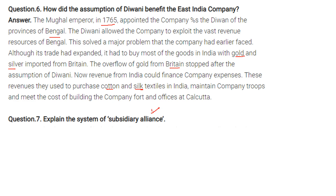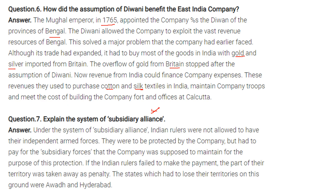Explain the system of Subsidiary Alliance. Under this system, Indian rulers were not allowed to have their own independent armed forces. They were to be protected by the company but had to pay for the subsidiary forces the company maintained for their protection. If Indian rulers failed to make payment, part of their territory was taken away as penalty. States that lost territories due to non-payment under the Subsidiary Alliance were Awadh and Hyderabad.